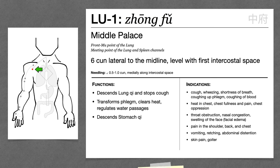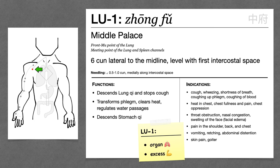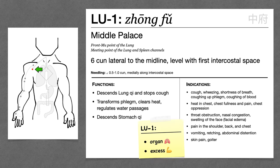For Lung 1, remember that it treats the lung organ and it's mostly used for excess patterns, especially when there's phlegm or pain in the chest.